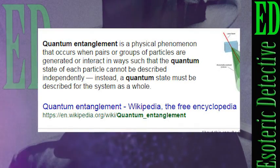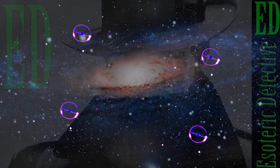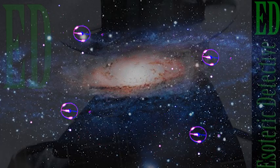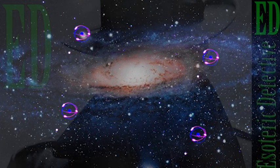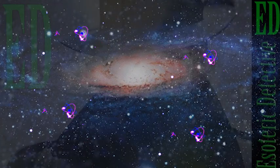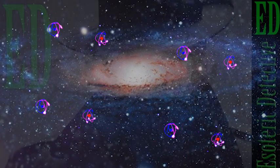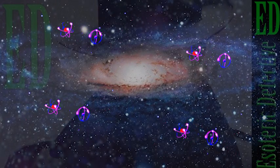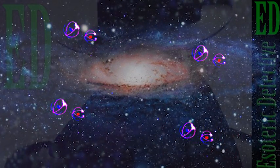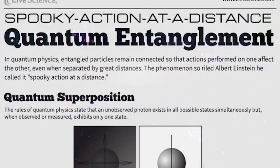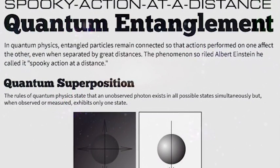For context, quantum entanglement is when you get a set of particles and you entangle them, then you split them apart. Now, the very mysterious thing about quantum entanglement, which has baffled the scientific community since its discovery, is that no matter how far you take those particles away from each other,